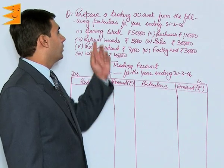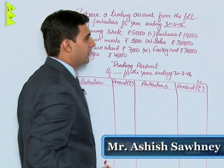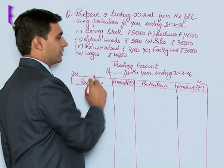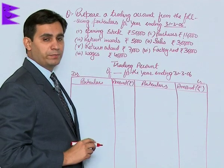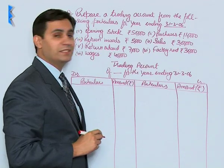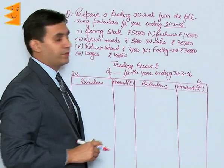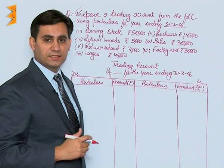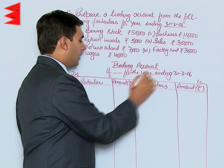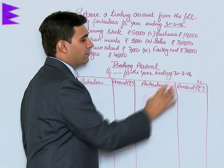In this question, you are required to prepare a trading account from the particulars for the year ending 31st March 2006. We are given opening stock, purchases, return inwards — which means sales return — return outwards, which means purchases return, then factory rent and wages. Remember, all of these are direct expenses and hence would appear in the trading account. The format is left blank for the name, for the year ending 31st March 2006.